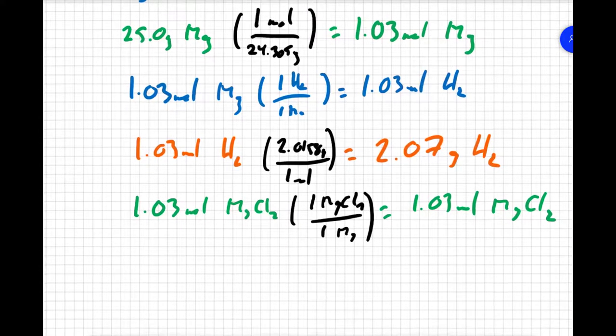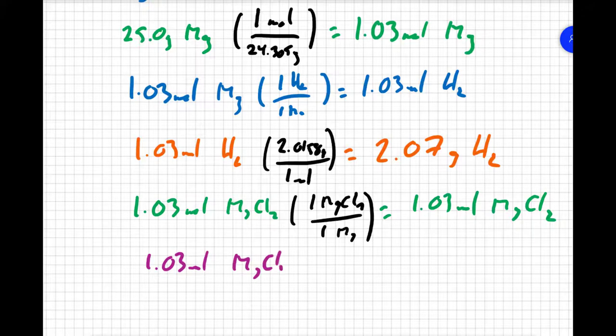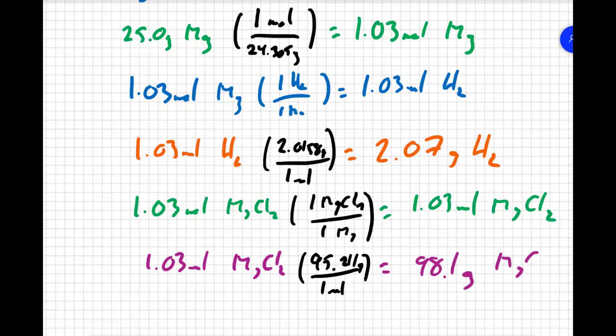It's asking for mass, so I'm going to take my 1.03 moles of magnesium chloride and multiply by the molar mass, which is 95.211 grams for every one mole of magnesium chloride. So I get 98.1 grams of magnesium chloride.